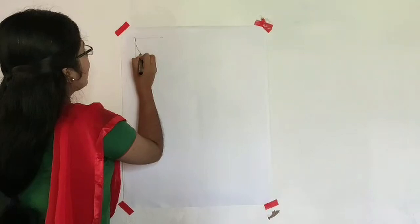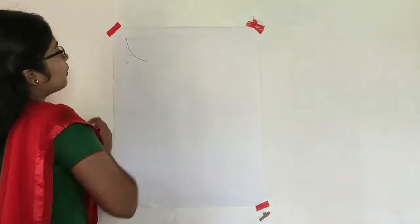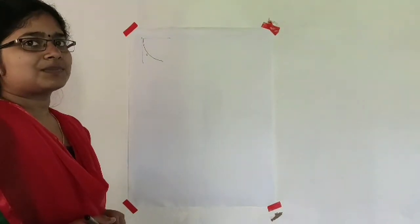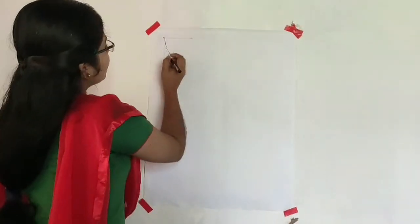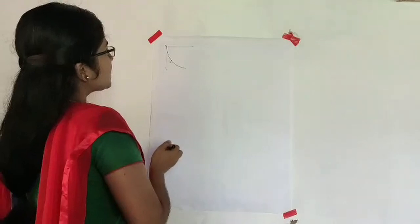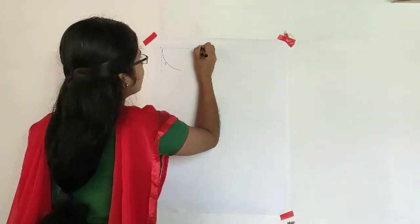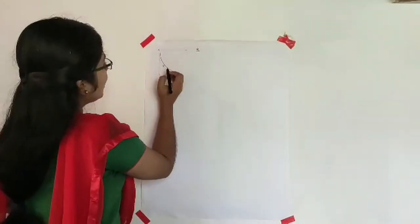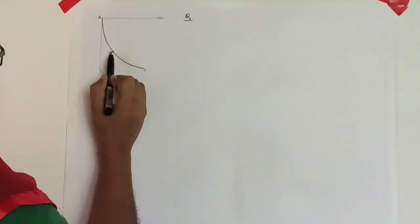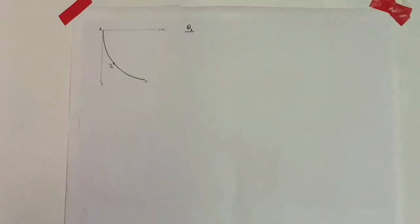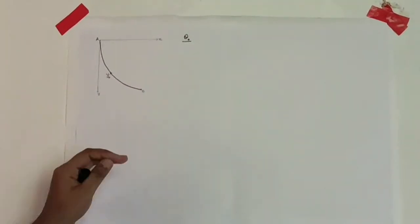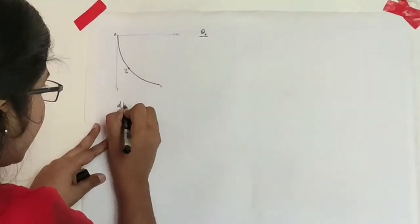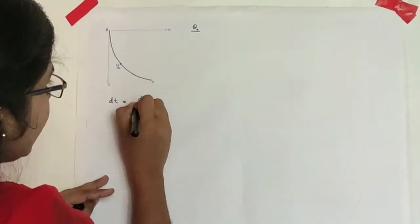We are considering an arbitrary point y₀ on this curve. The corresponding angle is taken as θ₀. Now we find the time taken by the bead to travel from y₀ down to the lowest point. We need to find what dt is in this case.